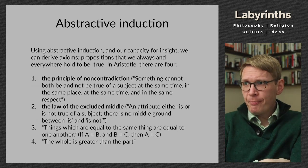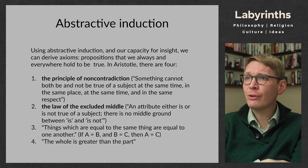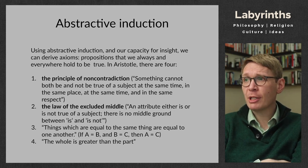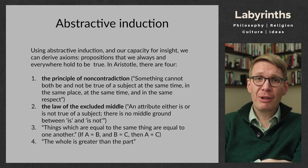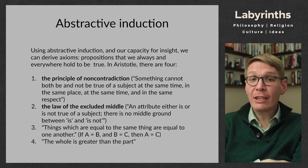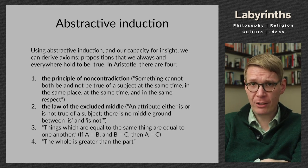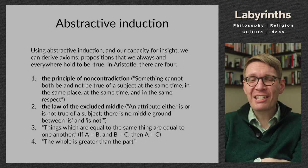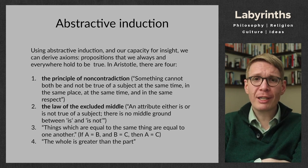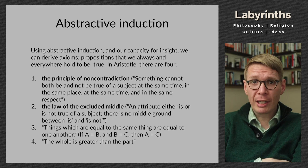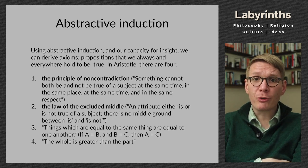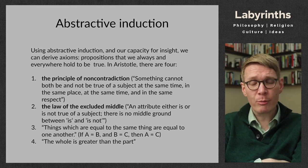Using abstractive induction, and following Aristotle closely, Hauser says we can derive four axioms. An axiom is a proposition we always and everywhere hold to be true — something I'm not going to question in the course of an investigation. Each of these has been questioned and challenged by later logicians, so I'm not saying they were born fully formed from the mind of God, but they are long-standing axioms in the practice of logic. Most of us take them for granted in everyday thinking.